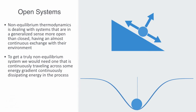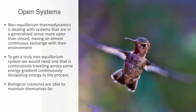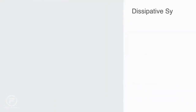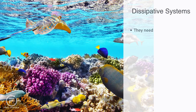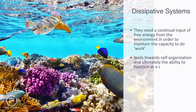This is a dissipative system, and it is exactly what biological creatures do. From a thermodynamic point of view, this is essentially what defines biological creatures — they are able to maintain themselves far from equilibrium by accessing free energy, dissipating it, and reiterating on this process, continuously traveling across some potential energy gradient. Dissipative structures are open systems; they need a constant input of free energy from the environment in order to maintain the capacity to do work. It is this continual flux of energy in and out of a dissipative structure which leads towards self-organization and ultimately the ability to function at a continuous state of non-equilibrium.